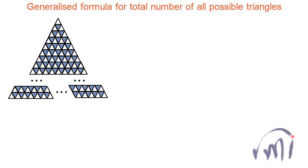In this video we will find the generalized formula to find the total number of all possible triangles in this kind of given triangle. All these triangles are equilateral triangles and the number of white triangles on each side are equal. Suppose in this particular triangle the number of small white triangles in the base are equal to n, and we will try to find the generalized formula to find the total number of possible triangles in a triangle whose base has n such small upright triangles.